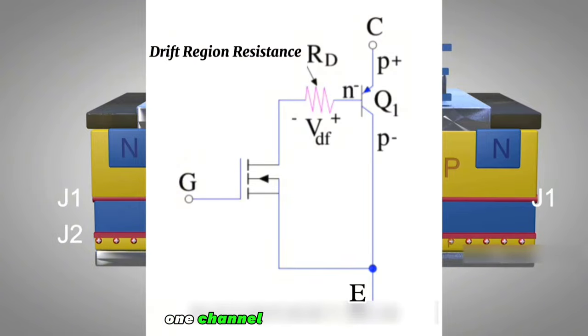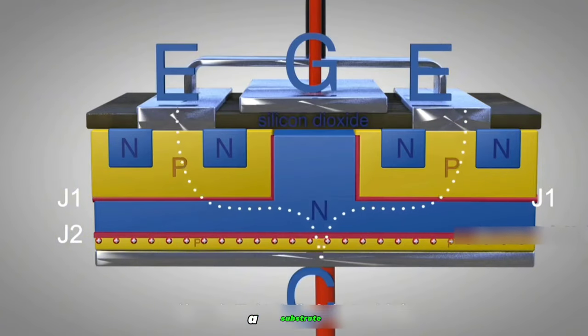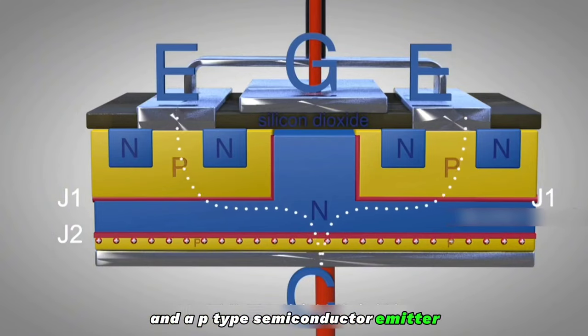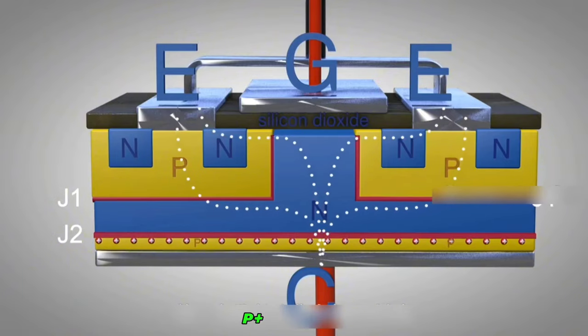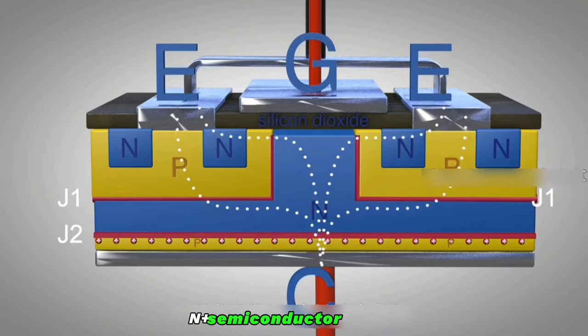We can see that there is more than one channel for forming current. The first path is current from collector through substrate, N-drift layer, and P-type semiconductor to emitter. This is the main channel of the working current. The second path is collector through P+ substrate, N drift layer, P-type semiconductor, and N+ semiconductor to emitter.